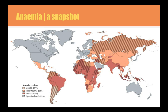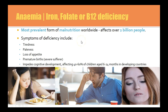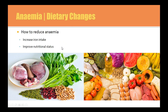Anaemia is another deficiency we're all pretty familiar with — iron deficiency anaemia, folate deficiency anaemia, or B12 deficiency anaemia. It is one of the most prevalent malnutrition deficiencies worldwide, with 2 billion people suffering from anaemia. Symptoms include tiredness, paleness, loss of appetite, premature births in pregnant sufferers, and impeded cognitive development. If iron deficiency were eliminated, there would be an increased national rise in productivity levels of about 20%. Increasing iron intake and improving overall nutritional status are key dietary changes.